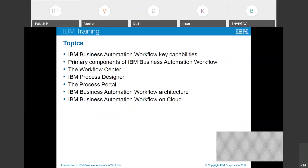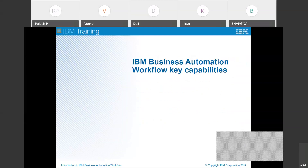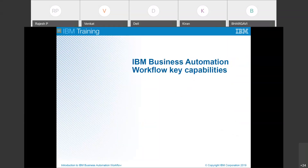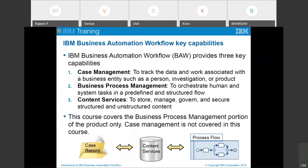Let me explain the Business Automation Workflow key capabilities — what it is capable of and what we can do with it. In Business Automation Workflow, we get three capabilities. The first one is Case Management. The second one is Business Process Management. And the third one is Content Services.